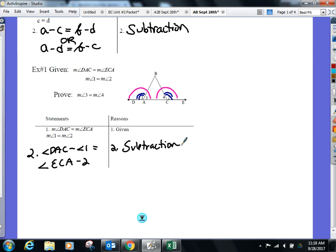How do I get three and four from this statement? What is the same as taking angle DAC and removing angle one? What do I have left over when I remove angle one? The straight line, take angle one out. What's left? Angle three. Take ECA and remove angle two. What's left? Angle four. And what gives me the right to do that? What did I just do there?